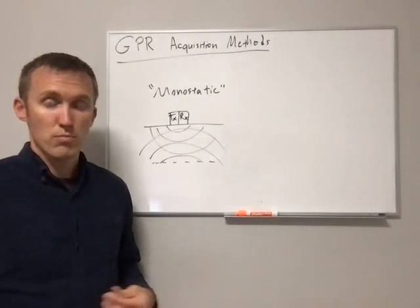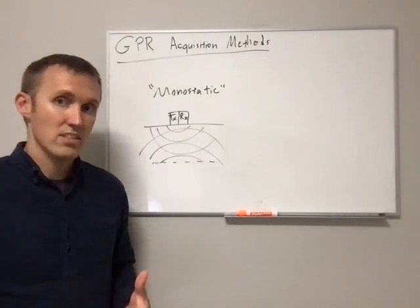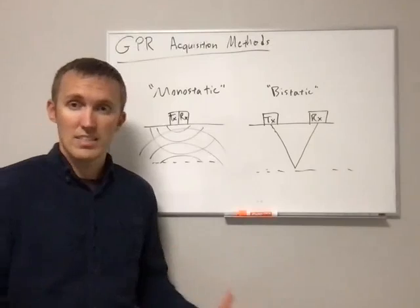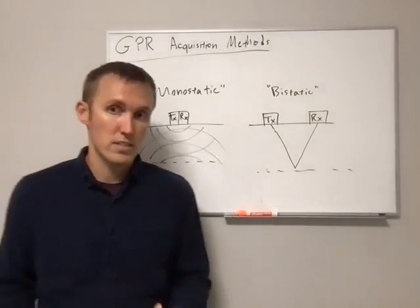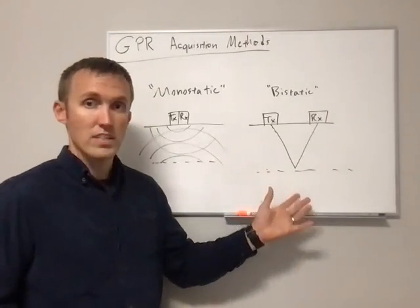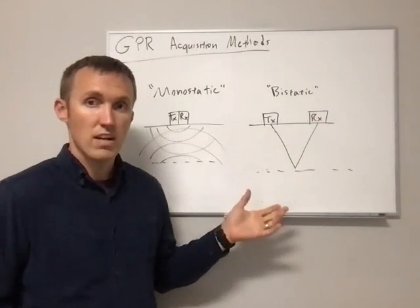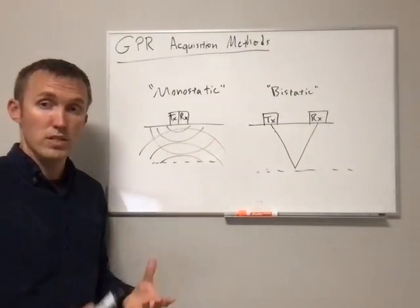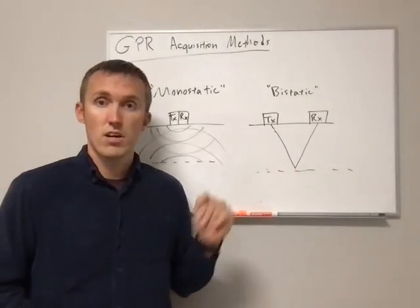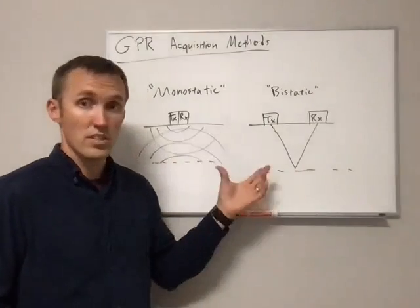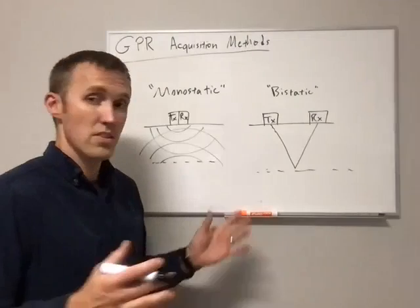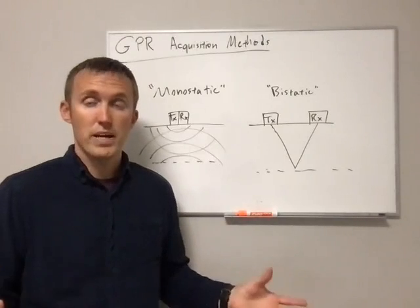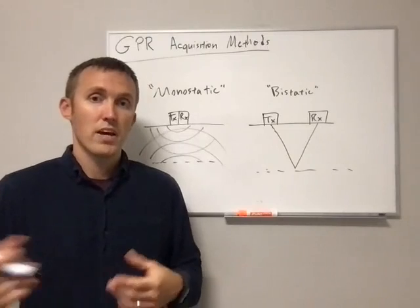The other option is to separate out the transmitting and receiving elements of the GPR, and that is called a bi-static system. The transmitting and receiving antennas are now offset from each other, which means the reflection point is offset from the location of the antennas themselves. Whereas before we were seeing straight down below the GPR system, now we can see offset from either one of the antennas. This bi-static system gives us greater flexibility in what we can do with GPR.